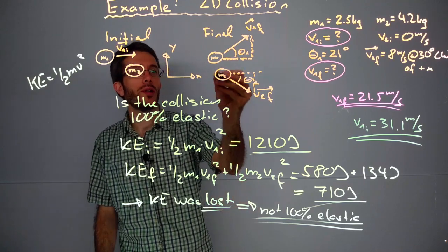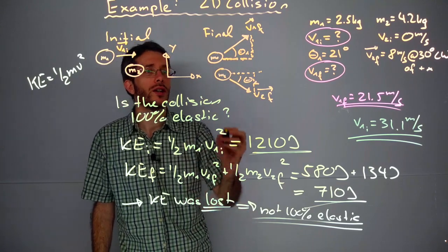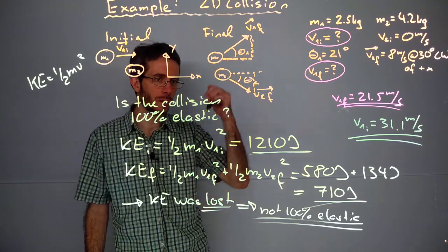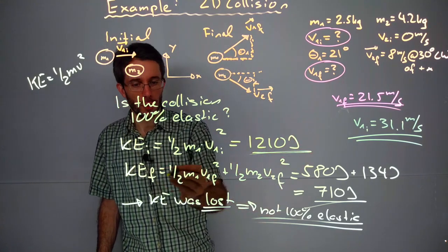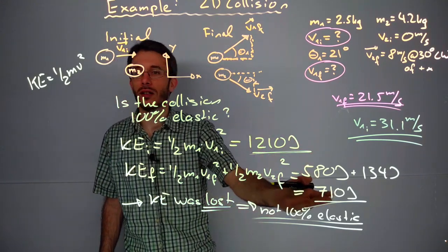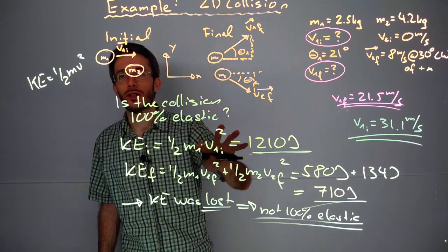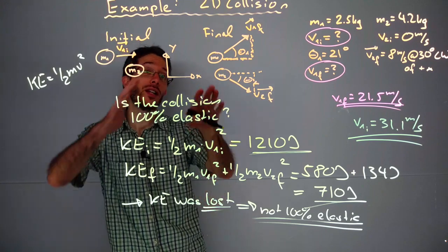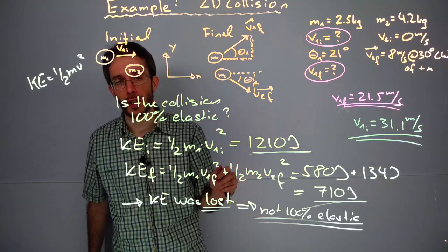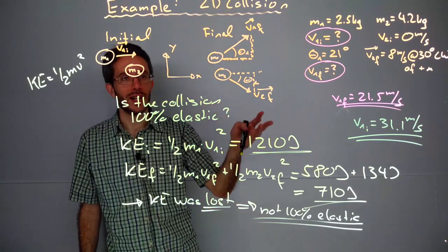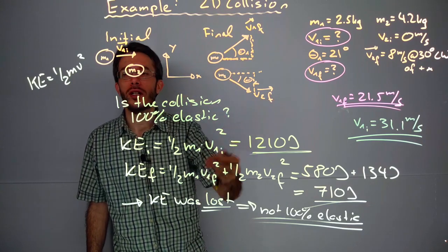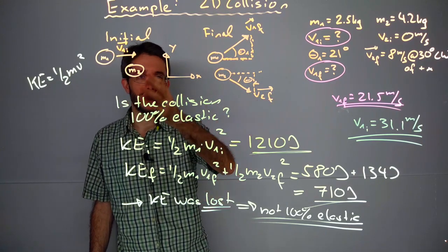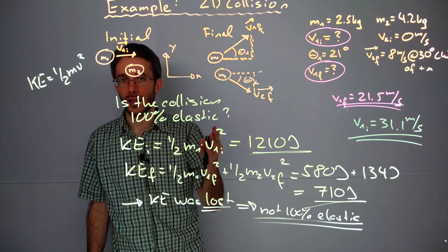Where did the energy go? Probably there was some deformation on one of the objects, or something transformed into heat or sound. But all in all, kinetic energy was clearly lost. Therefore, the collision was not 100% elastic. And the fact that we have two objects traveling in separate directions means it was not inelastic. So it's a realistic collision that's somewhere in between 100% elastic and 100% inelastic.